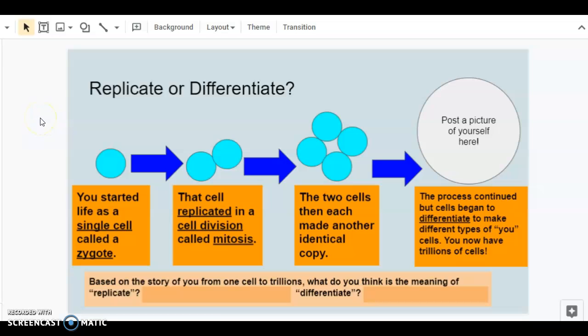So replication and differentiation, section one. In replication and differentiation we have two terms here that mean very different things, but they are related to each other. Let's take a look at an example. You started life as a single cell called a zygote. That cell replicated in a cell division called mitosis. Now we have two. Those two cells then each made another identical copy of themselves, so instead of two cells there are now four. That process continued but the cells began to differentiate to make different types of cells, and now you have trillions of cells.